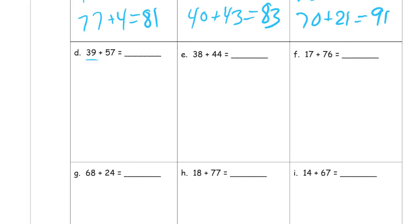And here we have a 39. That's a 9. So, I'm going to need 1 from this 57. And that means the other part of the number bond will be 56, because it's 1 less than 57. 39 plus 1 equals 40. And 40 plus 56 equals 96.